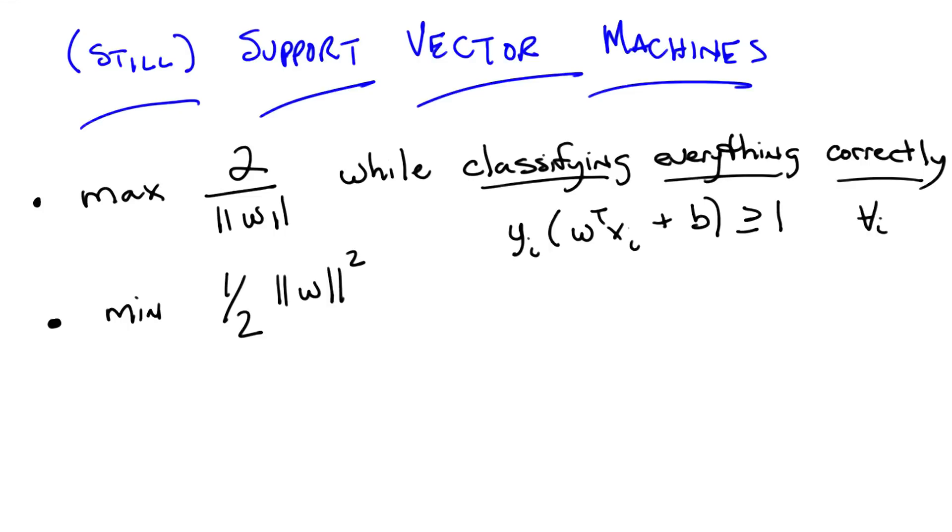This is easier because when you have an optimization problem of this form, something like minimizing a w squared subject to a bunch of constraints, that's called a quadratic programming problem. And people know how to solve quadratic programming problems in relatively straightforward ways. Awesome.